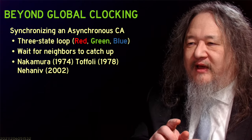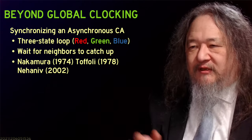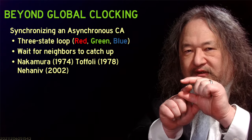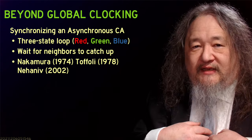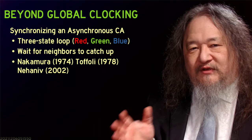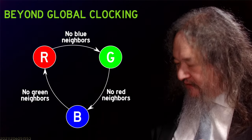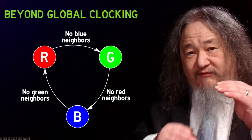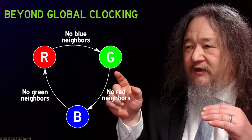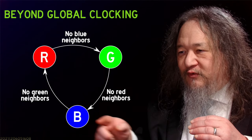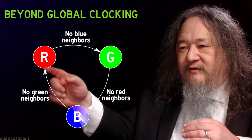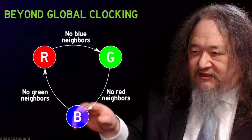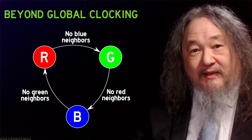The most important part is this three-state loop, which I'll call red, green, blue. The idea: each individual site looks at its neighbors and lets the neighbors catch up. If we're in state red and we have no blue neighbors, that means everybody's caught up and we can move on to green. If we're in green and we have no red neighbors, we can move on to blue. If we're in blue and we have no green neighbors, we can move on to red. If I'm sitting in red and I have a blue neighbor, that means someone hasn't caught up and I cannot make the transition.